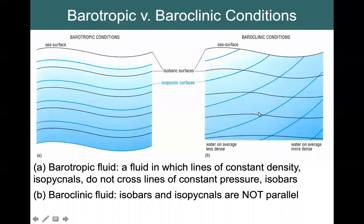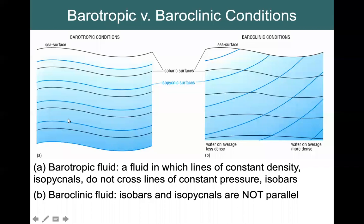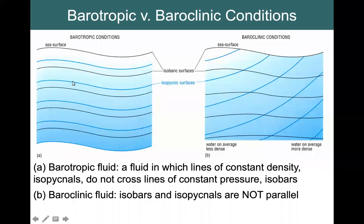We have schematics showing barotropic conditions on the left and baroclinic conditions on the right. Barotropic conditions exist in the ocean when the water is well mixed, so the density is homogeneous. If you have some slope in the sea surface, all of the isobars — the levels of equal pressure — will be parallel to the sea surface, and all of the isopycnals — the levels of equal density — will also be parallel to the sea surface. The density is increasing with depth, as is the pressure, but these lines are parallel to the sea surface and do not cross.